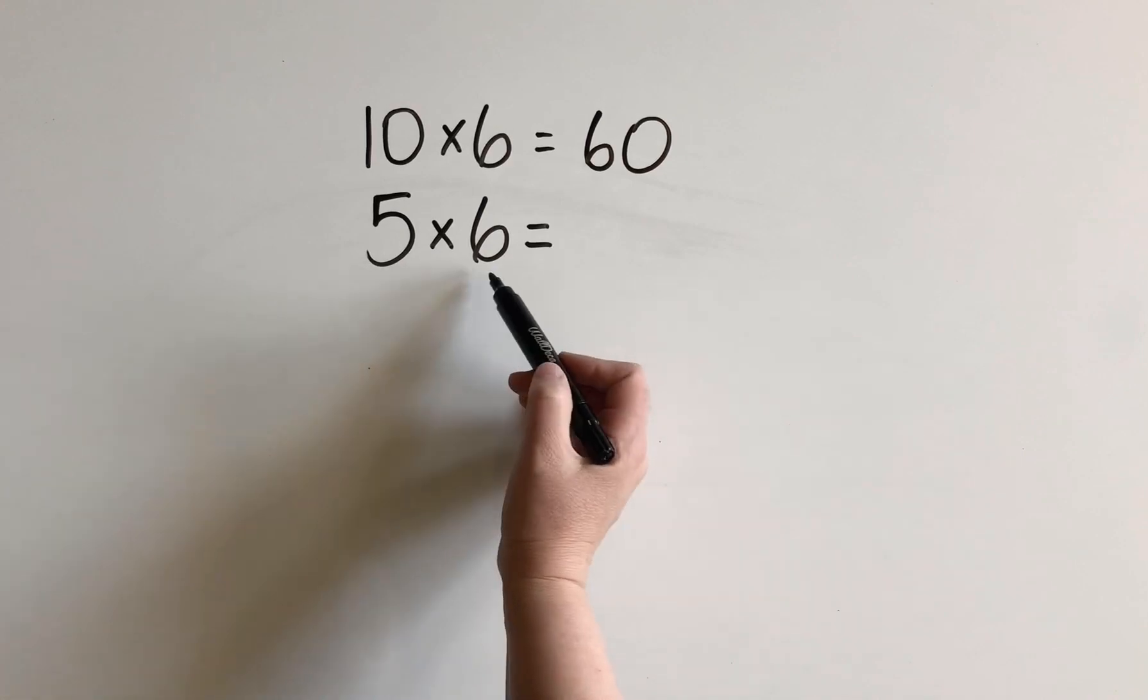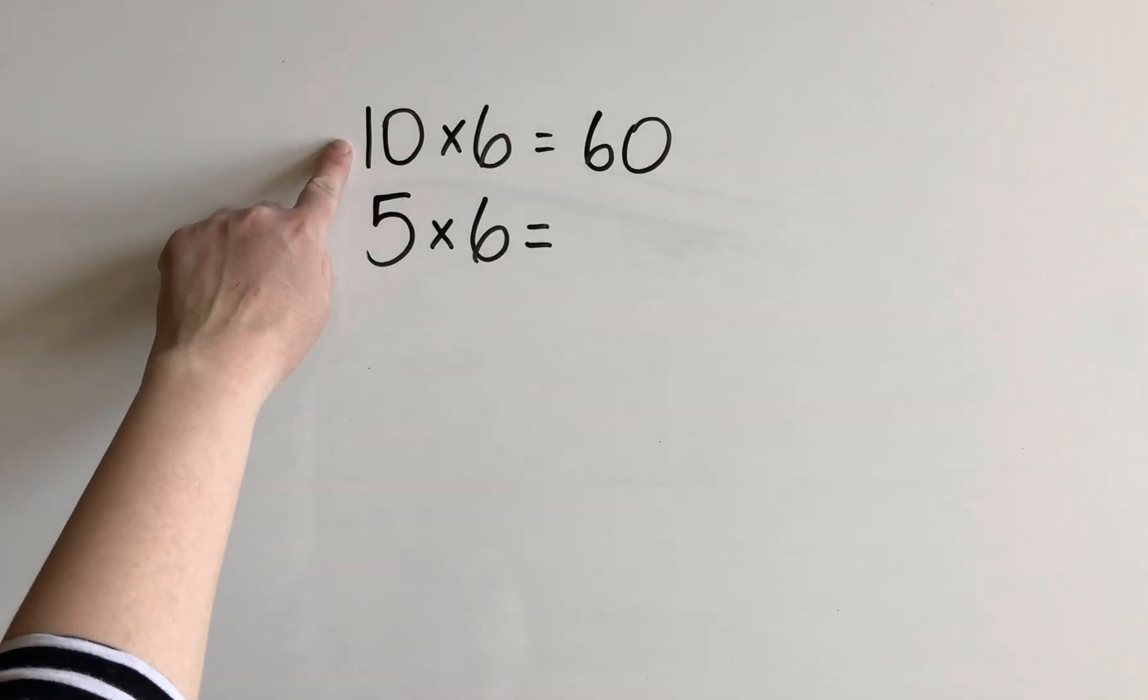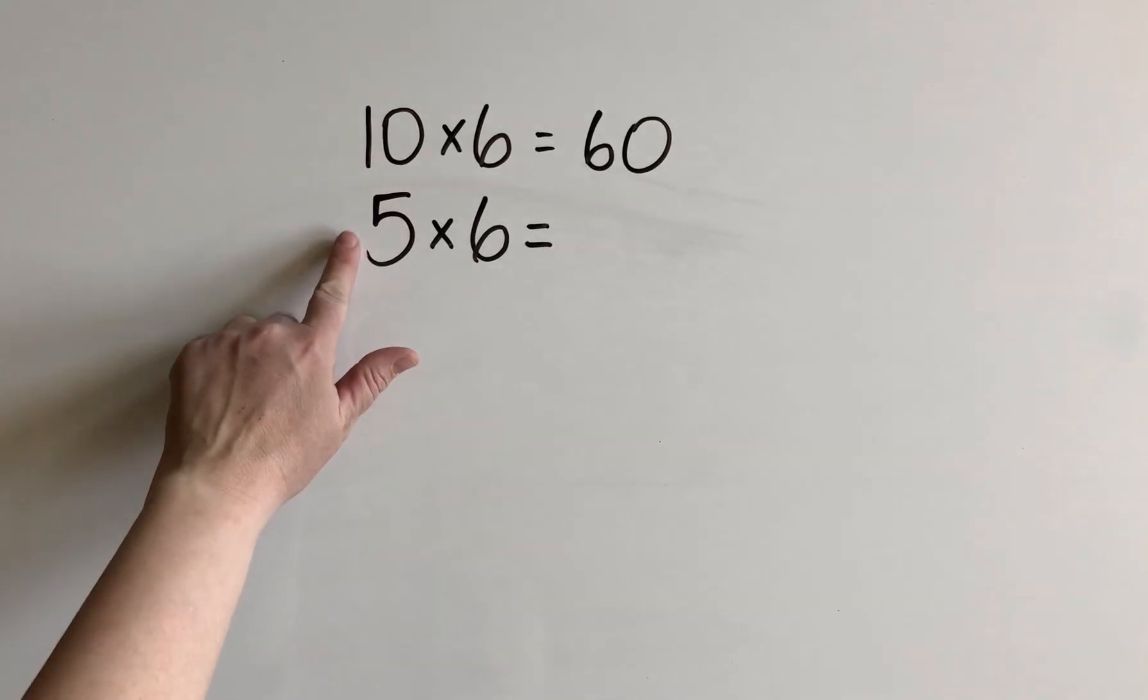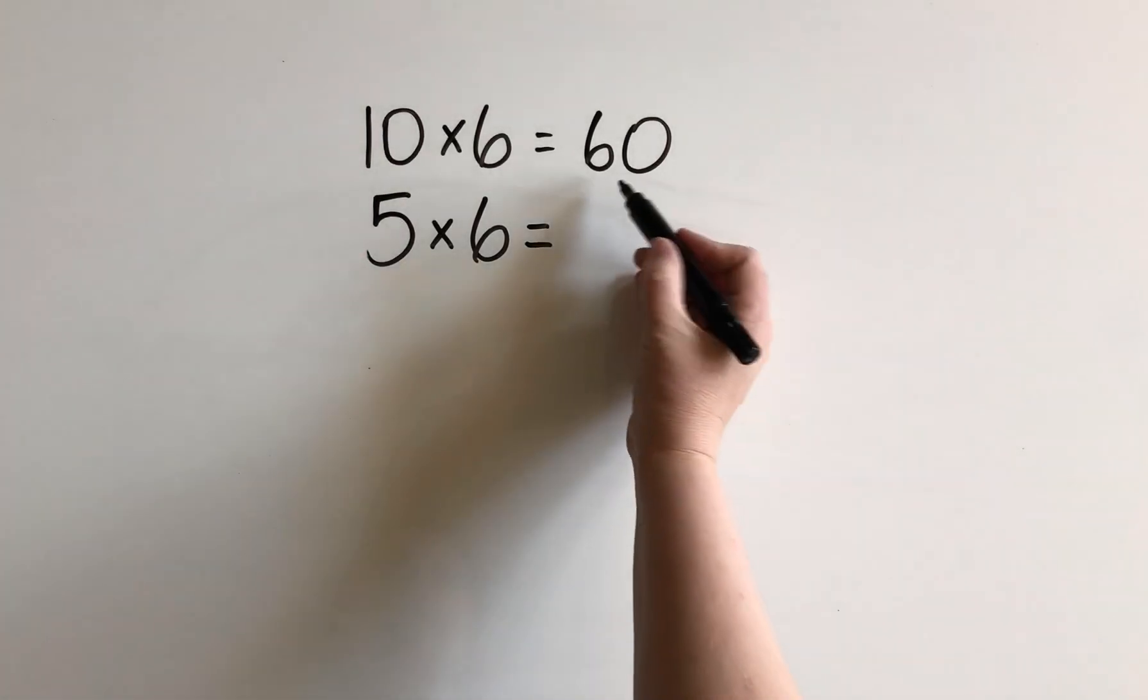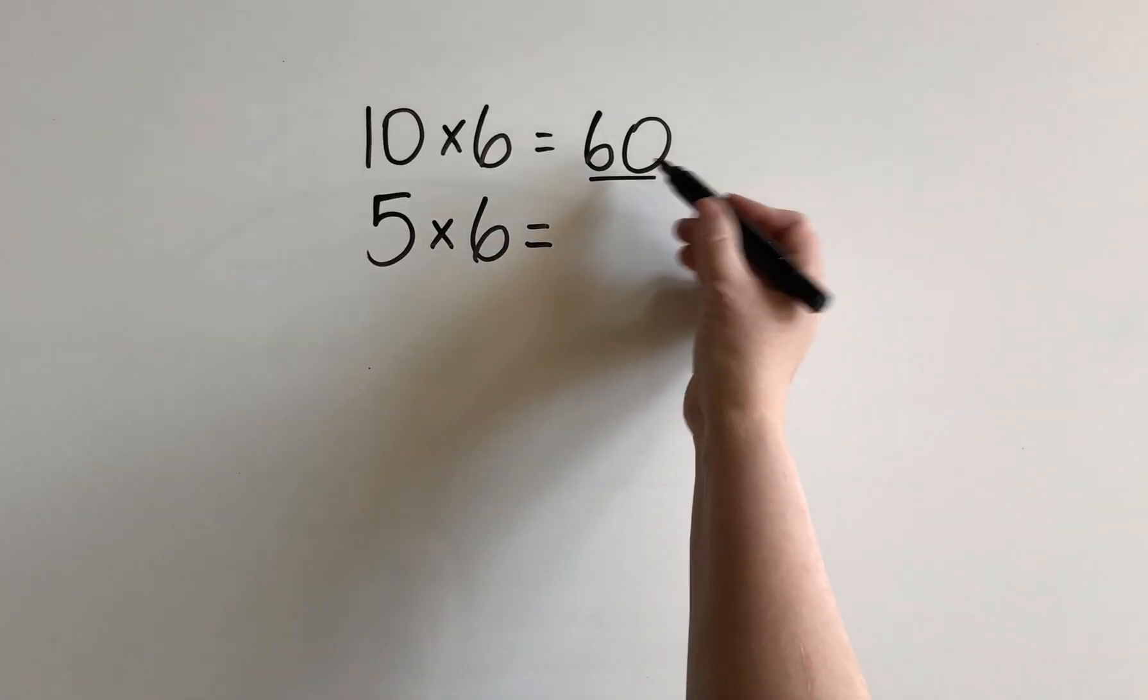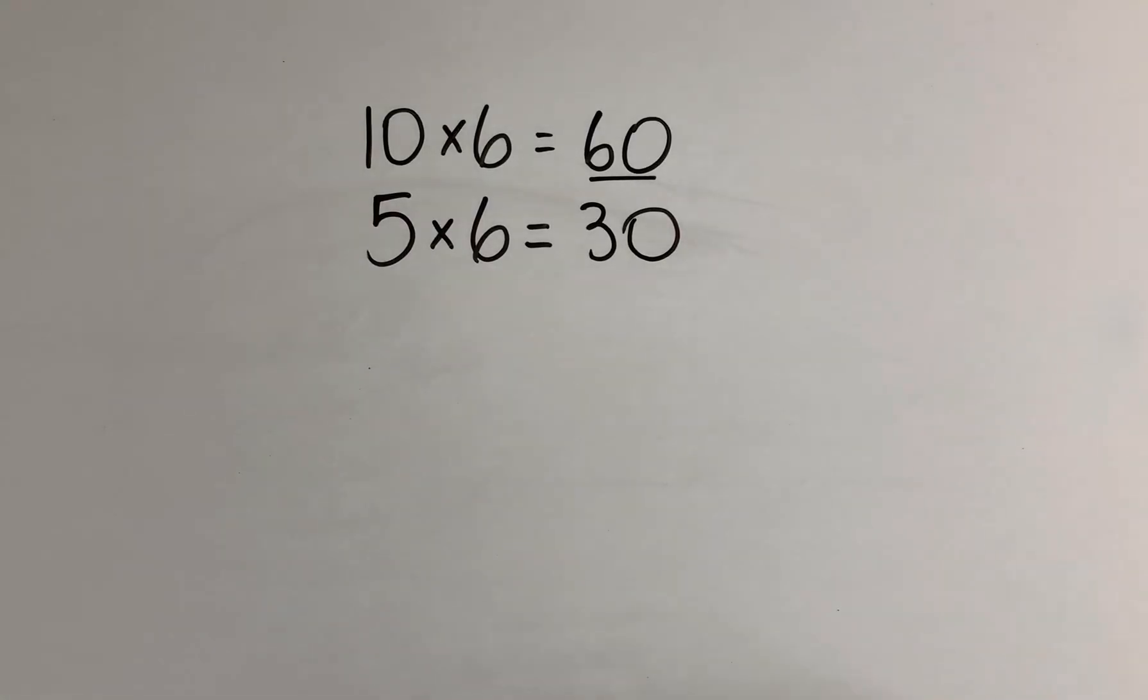Now 5 groups of 6 is half of this, isn't it? Imagine that we had 10 rows of 6 chairs. Now we only have 5 rows. We took away half of those rows. So our product or the answer is going to be half. So it's going to be 30. So this is a strategy for the 5's fact. You can think of the related 10's fact and then take half of that.